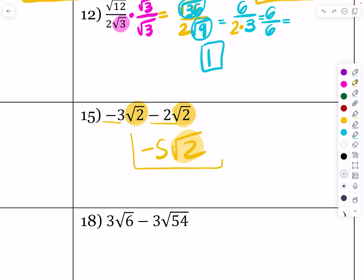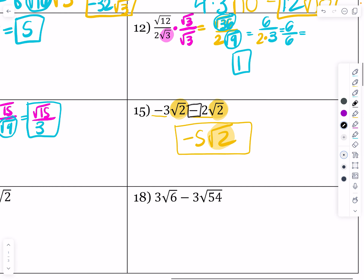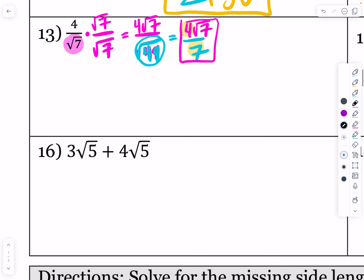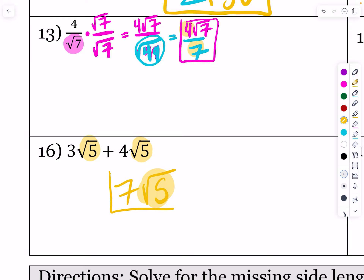Be careful here — people get going fast and want to multiply. They want to say negative 3 times negative 2 is positive 6, and 2 times 2 is root 4. But this is not multiplication — this is subtraction. Slow down when you get to these problems. For the next one: I have some like radicals because this one is a root 5 and this one is a root 5. That's like saying I have 3 cows and 4 cows — how many total? 7 cows. So that becomes 7 root 5.